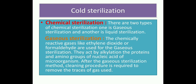Now we will see cold sterilization methods. The major sterilization methods which do not include heat are covered under cold sterilization. An important type is chemical sterilization, where sterilization is achieved by means of chemicals. Chemical sterilization is subdivided into two types: gaseous sterilization and liquid sterilization. Chemically reactive gases like ethylene oxide or formaldehyde are used for gaseous sterilization. They act by alkylating the proteins and amino groups of nucleic acids of microorganisms. After gaseous sterilization, a cleaning procedure is important to remove the chemical gases from the surfaces of the sterilized instruments or materials.